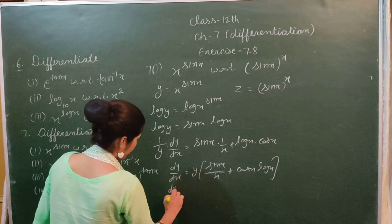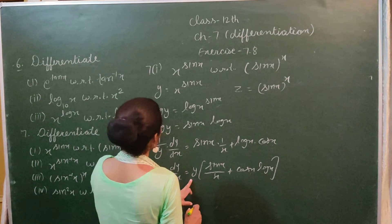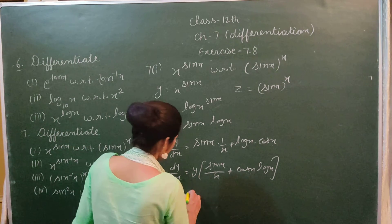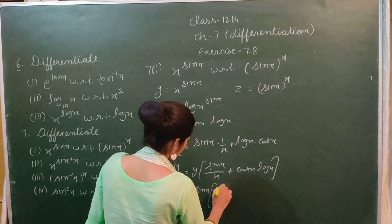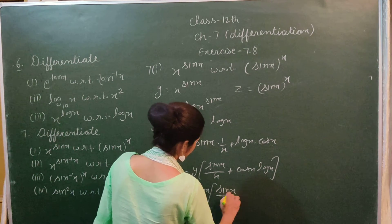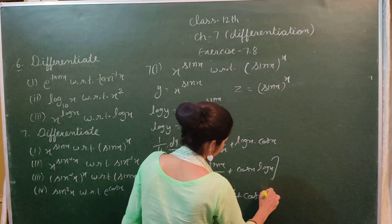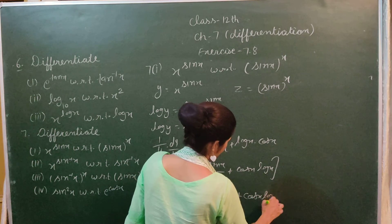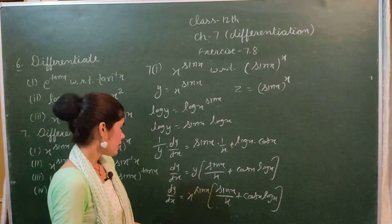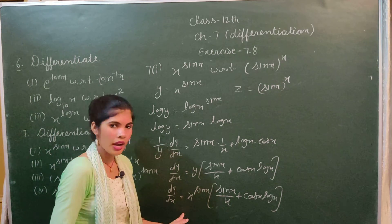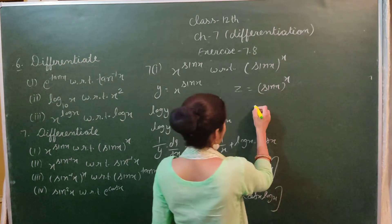Substituting y = x^(sin x), we have dy/dx = x^(sin x) times (sin x / x + cos x log x). This completes the differentiation of y with respect to x.